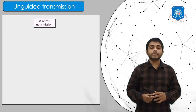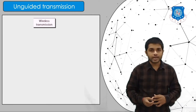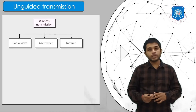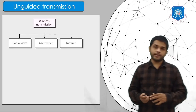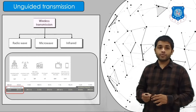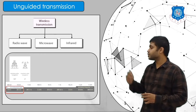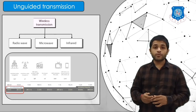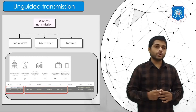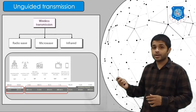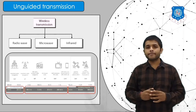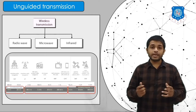Unguided transmission, also called wireless transmission, is divided into three types: radio wave, microwave, and infrared. The range of 3 kHz to 300 kHz is for ship communication; 300 kHz to 300 MHz is for television, radio, and mobile phones; and 3 GHz to 300 GHz is for satellite communication, which is the microwave range.